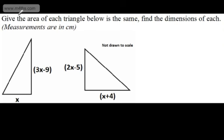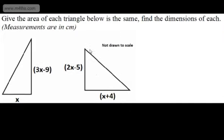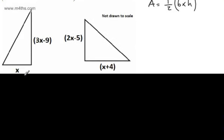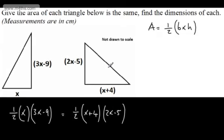Given that the area of each triangle below is the same, find the dimensions of each. Measurements are in centimetres. The area of a triangle is one-half times base times height. For the first triangle: area equals one-half times X times (3X minus 9). For the second triangle: area equals one-half times (X plus 4) times (2X minus 5). Setting these equal and multiplying both sides by 2.